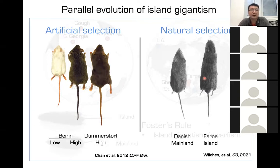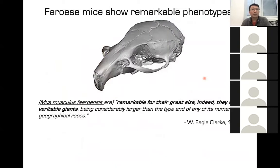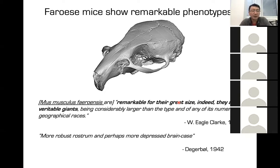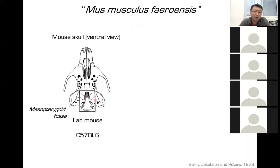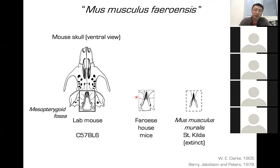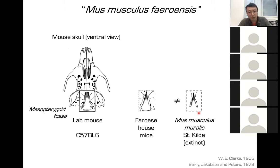Our first topic also starts on an island — in our case, island gigantism and the origin of a peculiar population of mice. There is an ecological rule called Foster's rule, or the island rule, where animals on remote islands tend to converge to a medium size. Small animals tend to become bigger and larger animals tend to become smaller — examples include dwarf hippos and elephants, or so-called hobbits on forest islands in Indonesia.